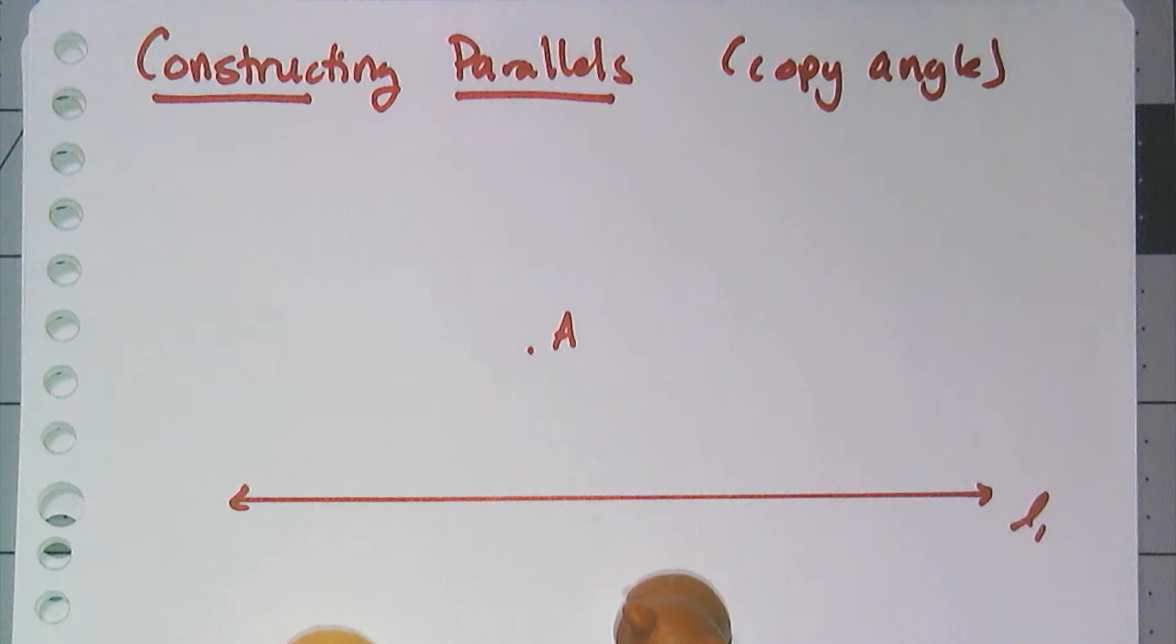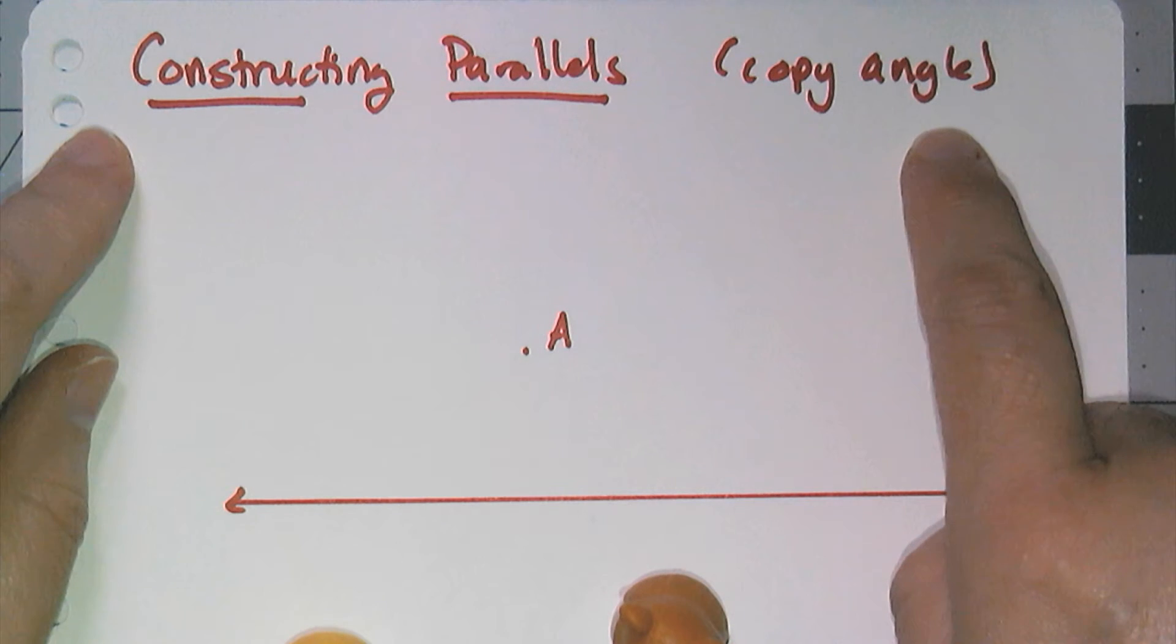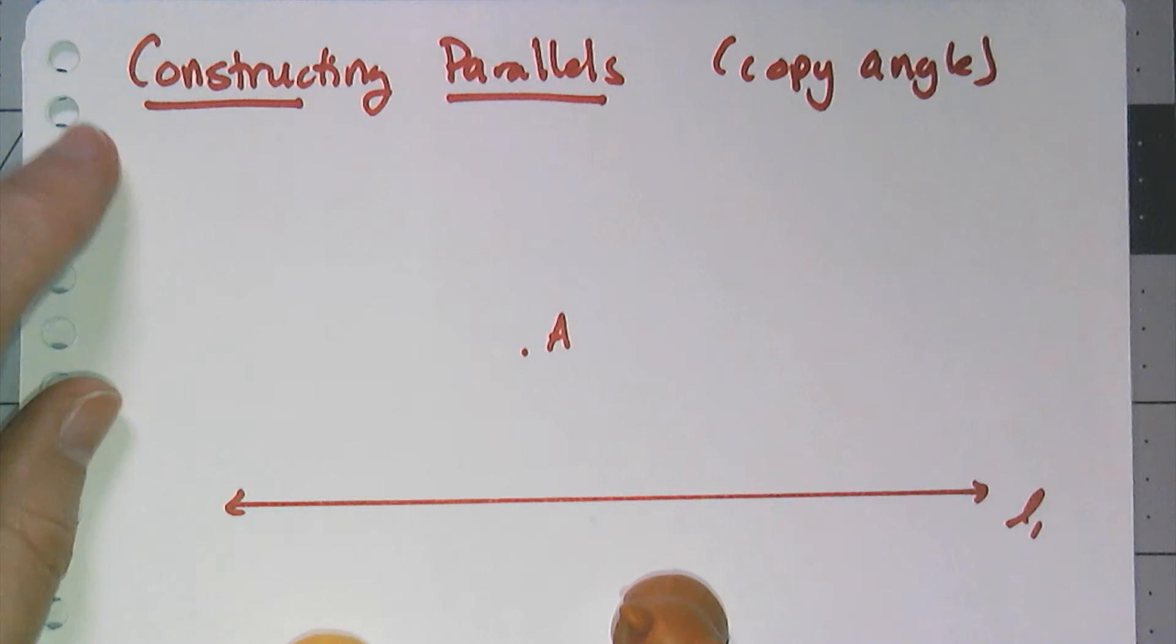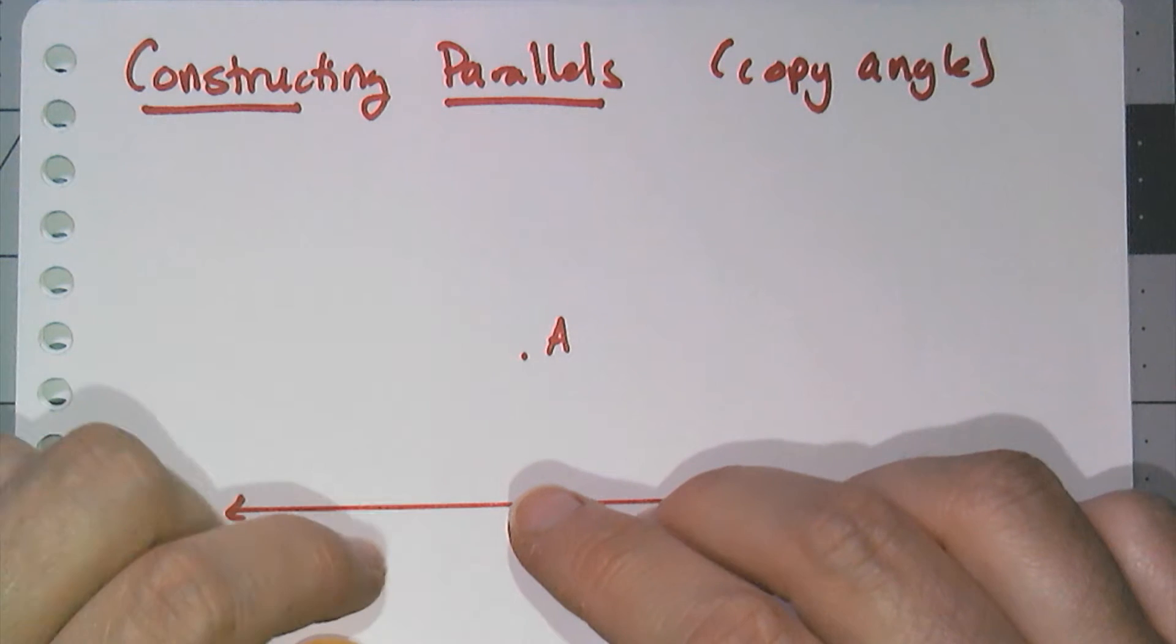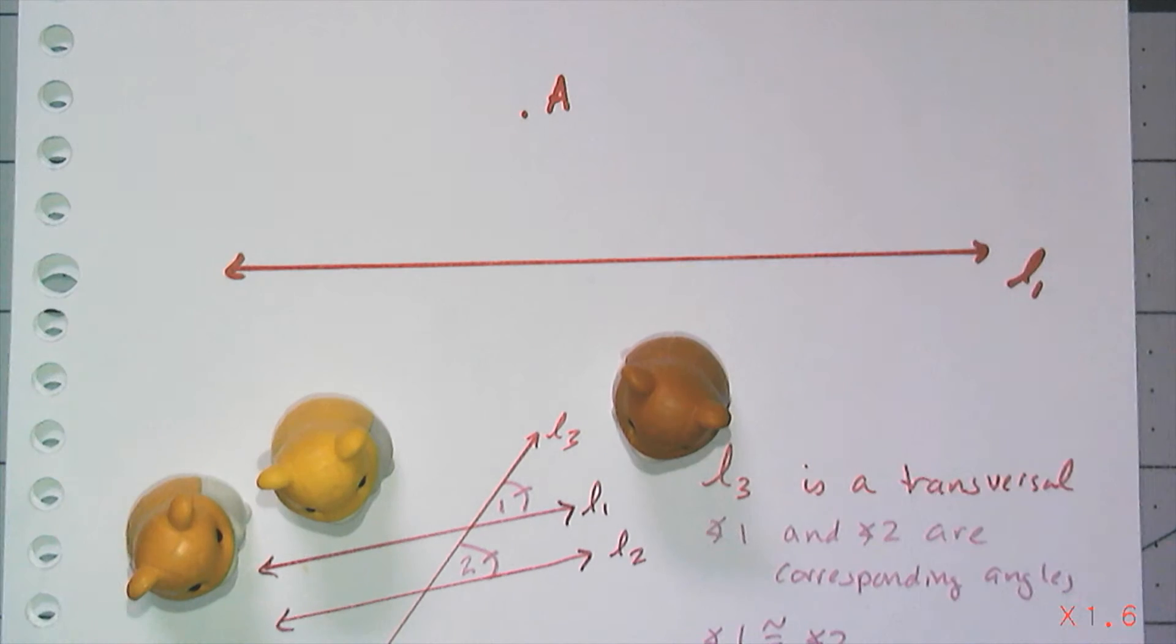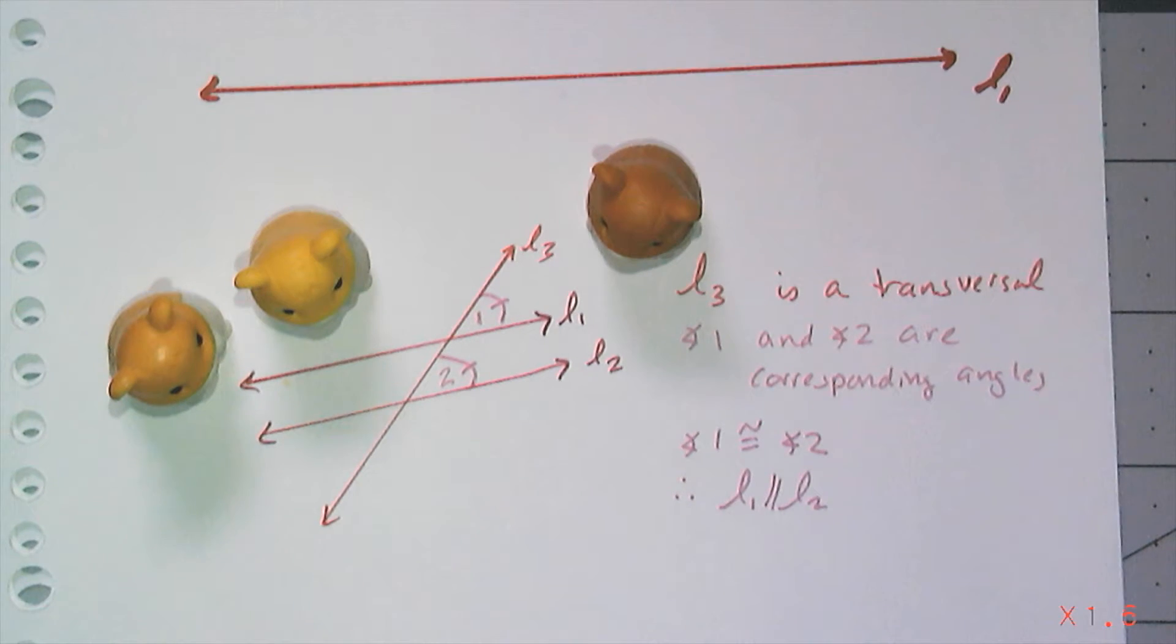In this video, we're going to learn a method of constructing parallel lines that uses the very basic construction of copying angles. So we're going to piece together some information we know about parallel lines to figure out how to do this. And so here is the important piece of information that we need to use.